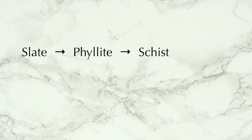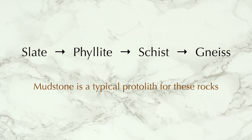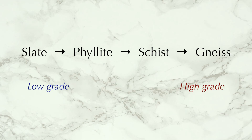Great pressure acting over a wide area produces metamorphic rocks such as slate, phyllite, schist and gneiss. These particular rocks are most often formed by the alteration of minerals in mudstone or similar sedimentary rocks. They can be classified in terms of grade, with a higher grade corresponding to higher pressure and temperature exposure.